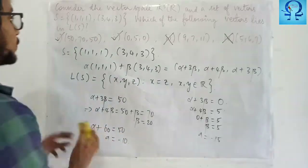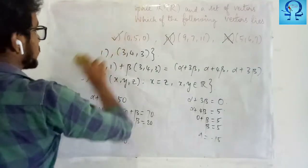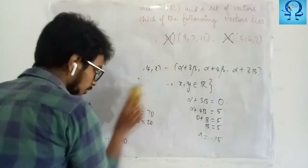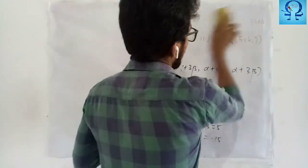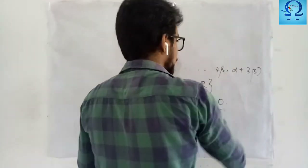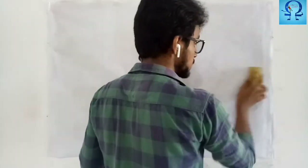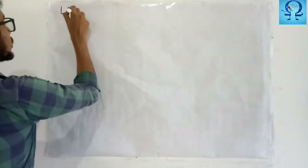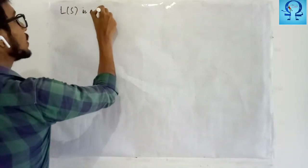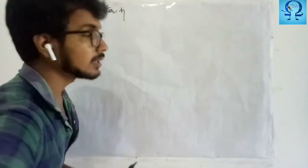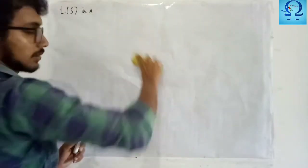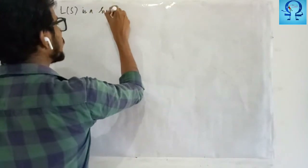Now we will prove one more result on linear span. For any non-empty set S taken from a vector space V, the linear span L(S) is a subspace of that vector space. We are asked to prove that L(S) is a subspace of V.